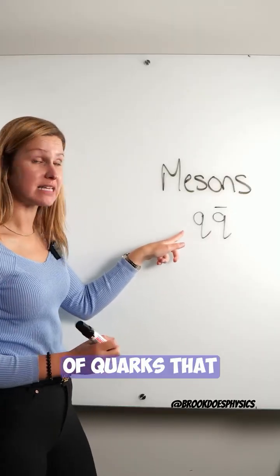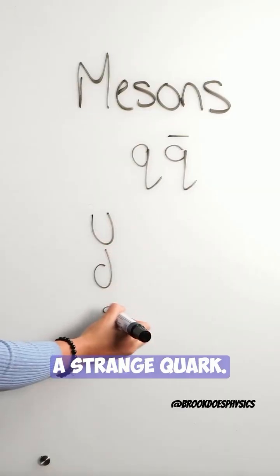So the types of quarks that exist are an up quark, a down quark, and a strange quark.